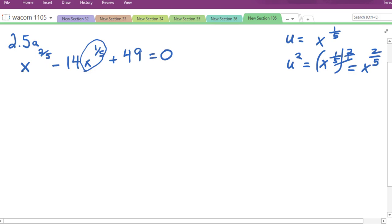So we're going to put u's here instead of these x's. So, this one is u squared minus 14u plus 49 equals 0. And now we'll try to solve. This one looks much easier to solve. It's a regular quadratic now. So we'll try to factor.